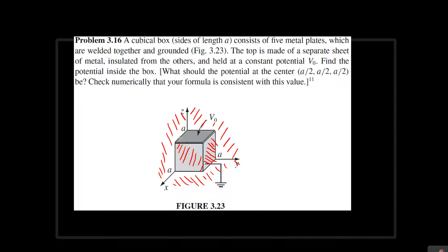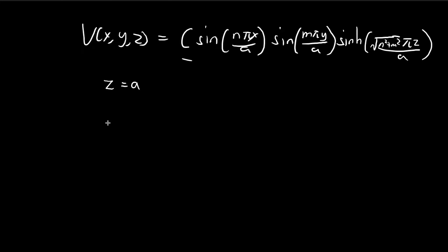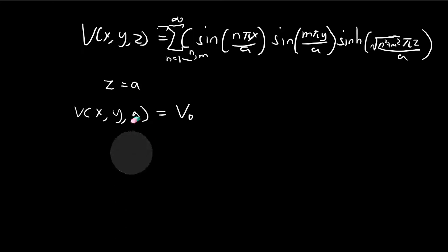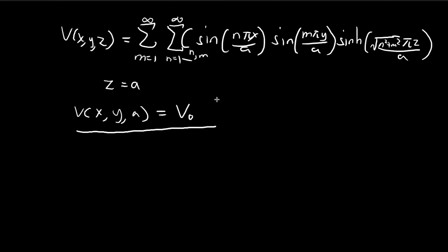We eliminate C using the final boundary condition: the top plate at z equals a, where the potential equals V₀. Since Laplace's equation is linear, the sum of all possible solutions is also a solution. We can use Fourier's trick to control C so that this condition is satisfied.